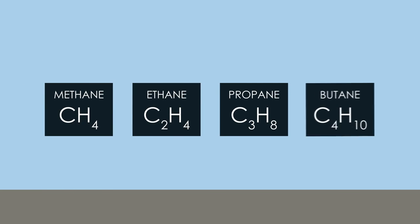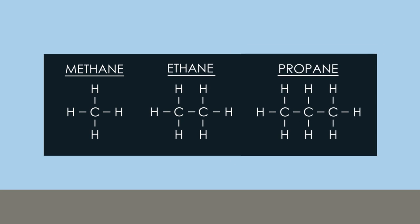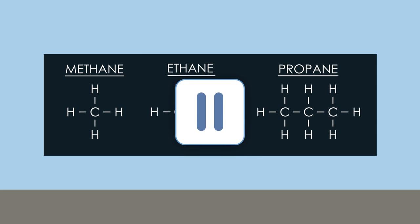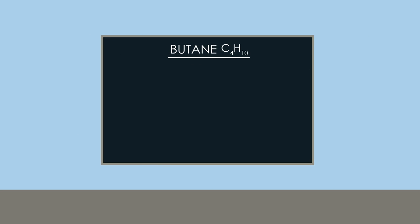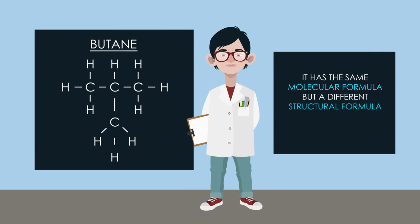Here are the formulae of the first four alkanes: methane, ethane, propane, and butane. Here are the structural formulae of the first three. Pause the video and draw out the structural formula for butane. Most of you have drawn a straight chain molecule. However, there is another way of arranging the atoms — it has the same molecular formula but a different structural formula. These two forms of C4H10 are called structural isomers.